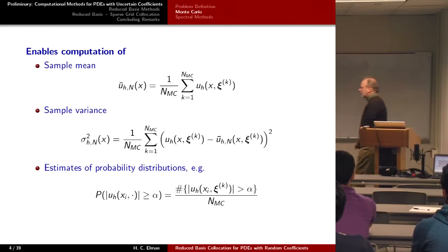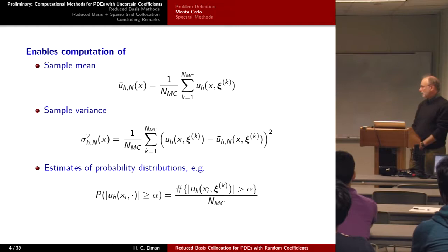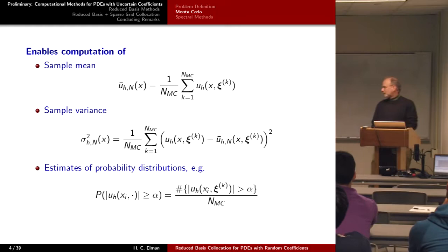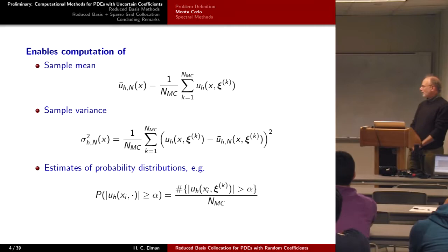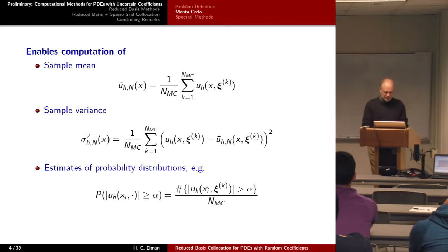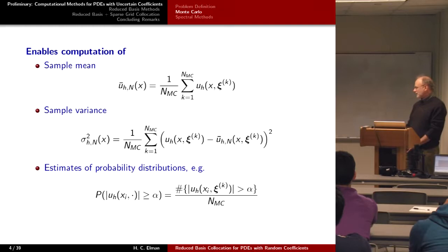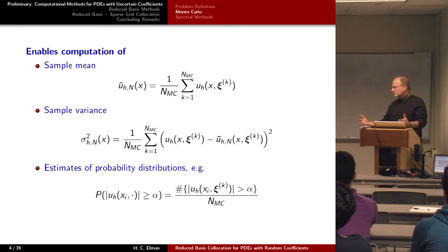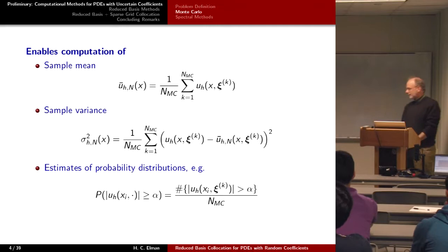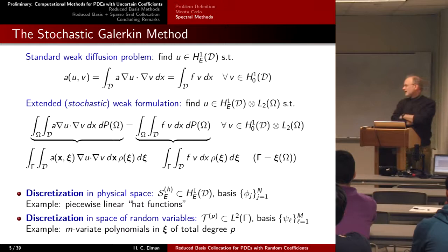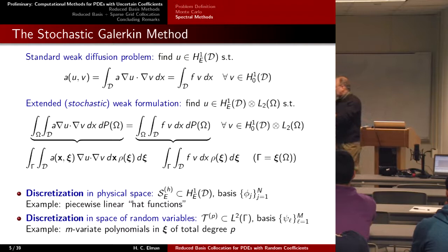If you do this Monte Carlo simulation, you compute N_MC sample solutions, then generate statistical data: you can compute the sample mean, sample variance, and estimate probability distributions. For example, if you want to know the probability of the solution being greater than some parameter — say for a pollutant concentration — you simply count how many solutions satisfy that condition divided by the total number. This is the standard classical way of doing simulation. The problem, as everybody knows, is that Monte Carlo methods are slow.